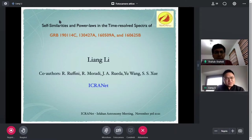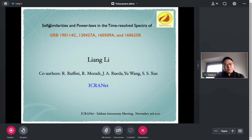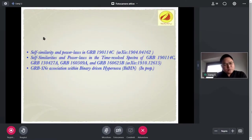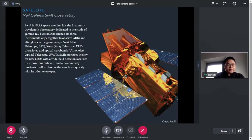Good afternoon, everyone. Thanks for inviting me. Today, I'm going to talk about self-similarity and power law in the time-resolved spectra of four very bright gamma-ray bursts: GRB 190114C, GRB 130427A, GRB 160509A, and GRB 160625B.